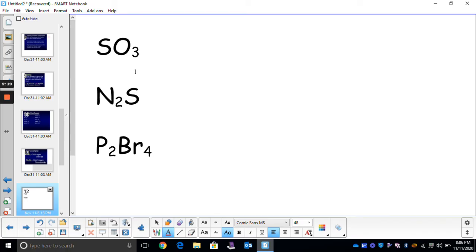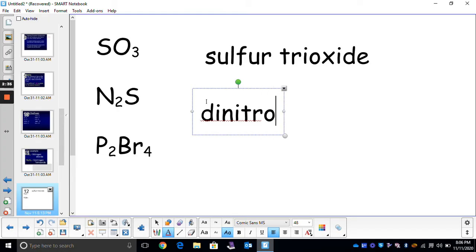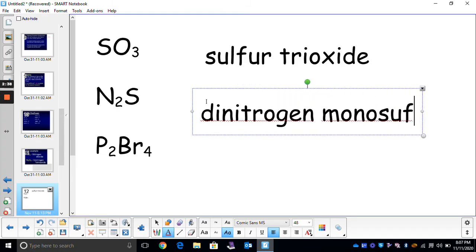For some examples here: the first one would be sulfur trioxide. Then we would have dinitrogen monosulfide. We use mono only on the second element. If our first element has one atom, we just say sulfur. We don't say mono. But we will use mono on the second element.